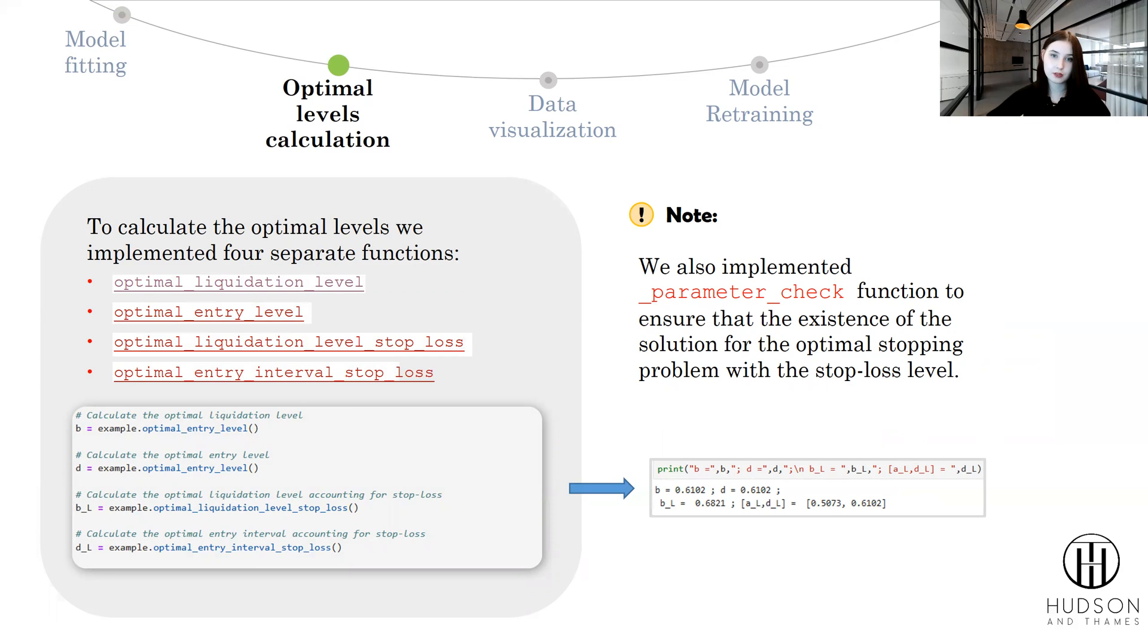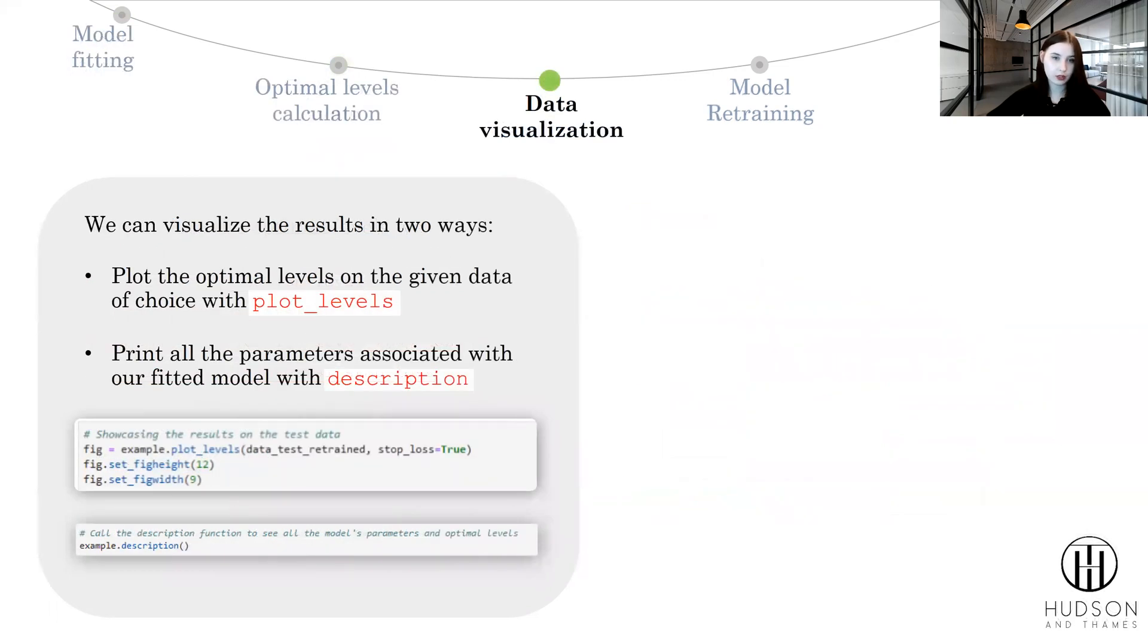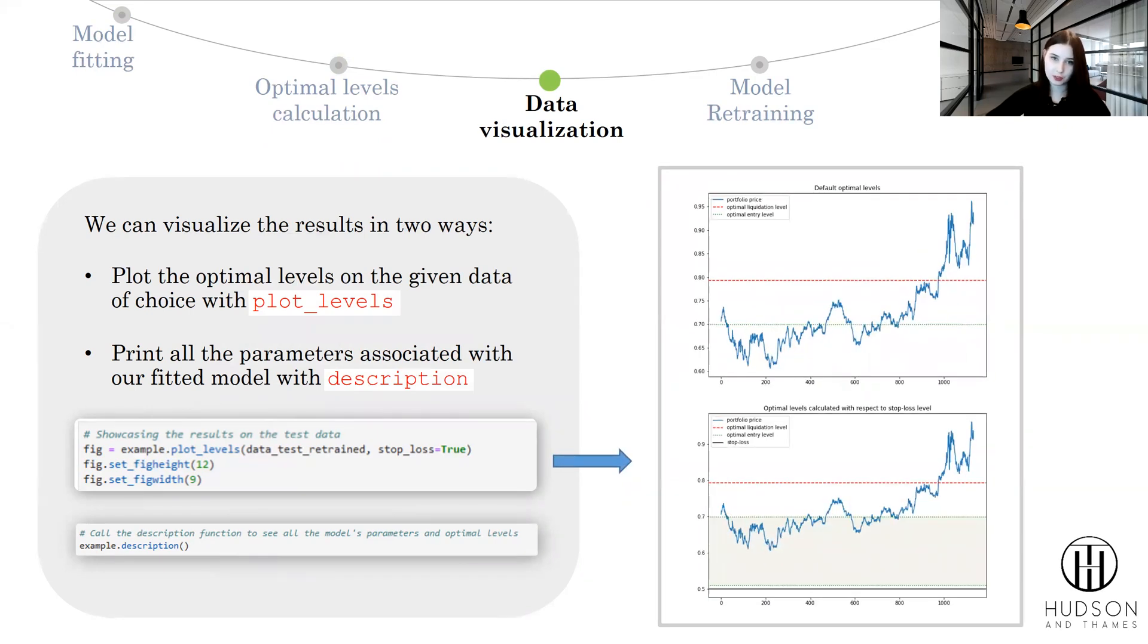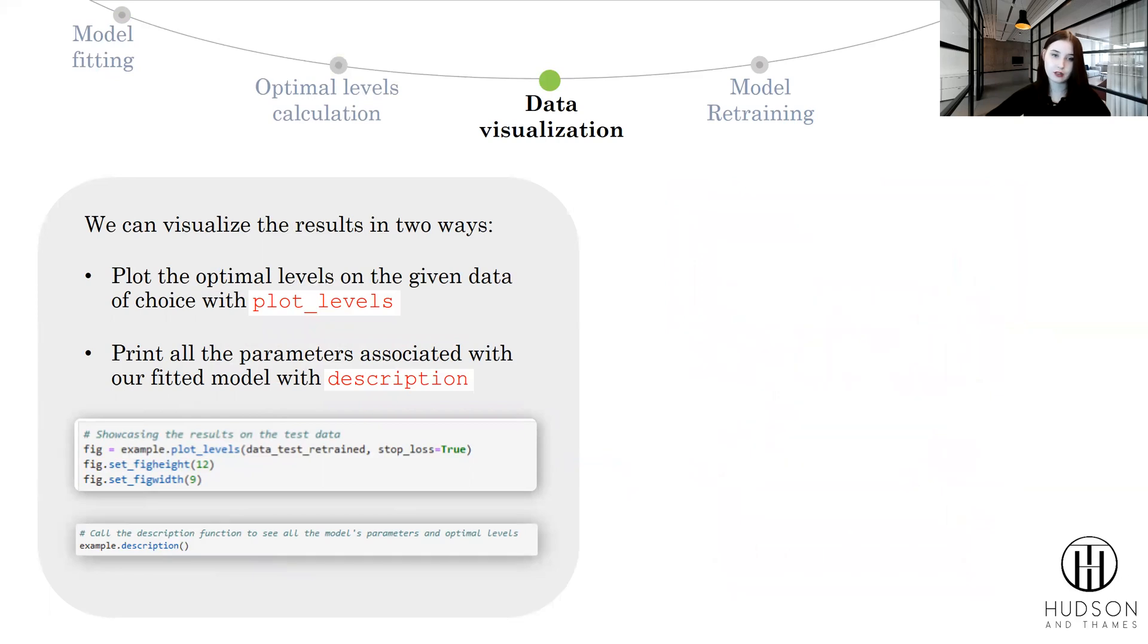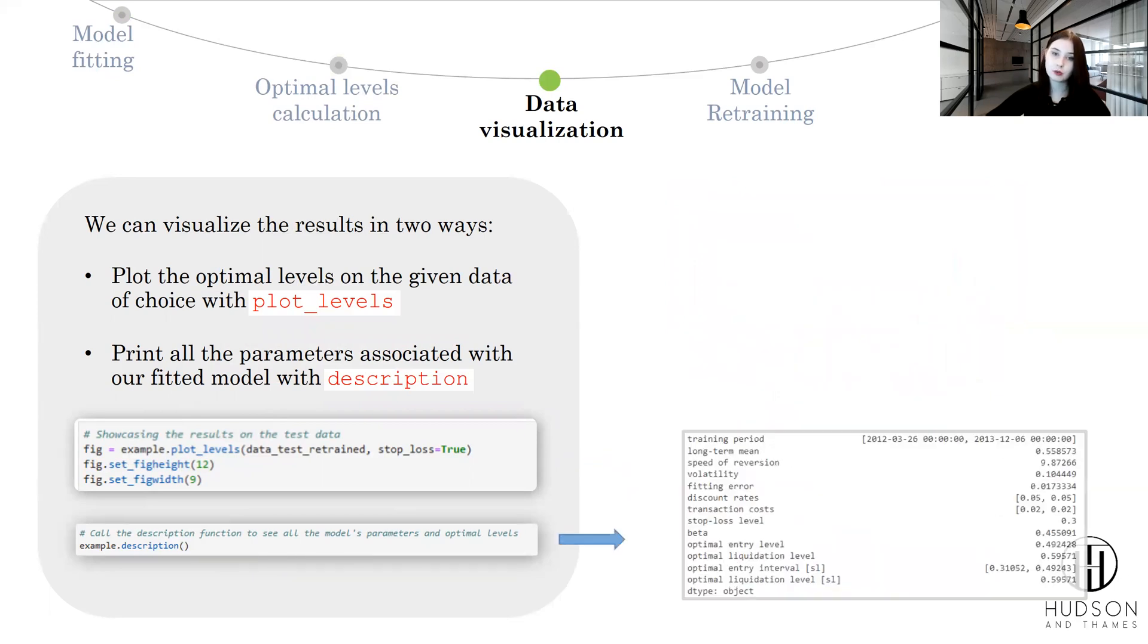Next, our next possible step will be data visualization. We can visualize results in two ways. First, plot the optimal levels on the given data of choice with plot_levels, and you will achieve results similar to what you've seen before in this presentation. And second, you can print all the parameters associated with our fitted model with the description function.